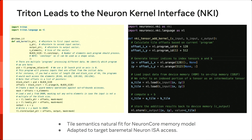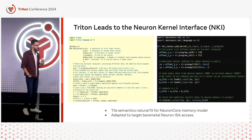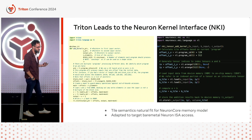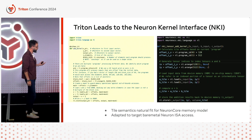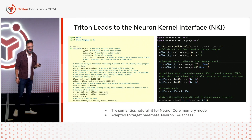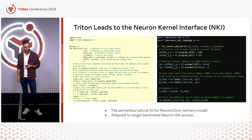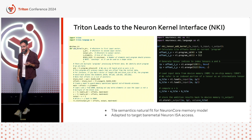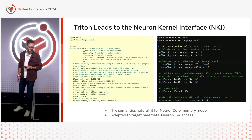And so we built the Neuron Kernel Interface. It exposes the NKI ISA API, and this allows users to finely control the instructions that are used to implement the kernel. It is integrated with the types from the NKI language.